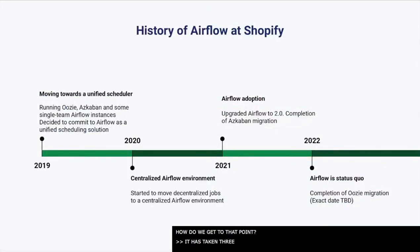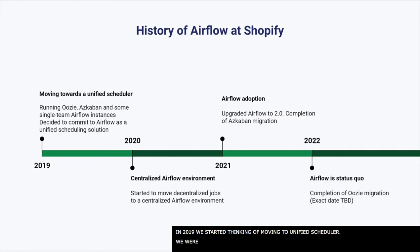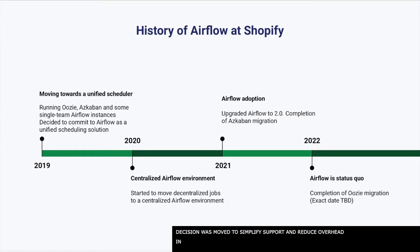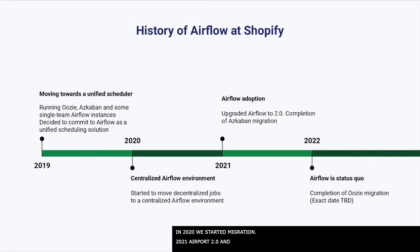It's taken us about 3 years to get to this point. In 2019 we started thinking about moving to a unified scheduler — at that time we were using Uzi, Azkaban, as well as some single-team Airflow instances. The decision was made to simplify the support model and reduce overhead from maintaining multiple schedulers. In 2020 we started the migration process. In 2021 we upgraded to Airflow 2.0 and completed the migration and deprecation of Azkaban. In 2022 we plan to complete the Uzi migration.